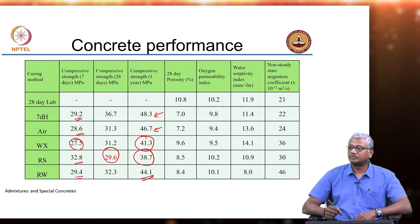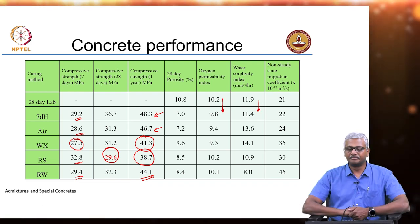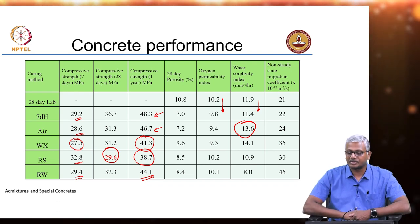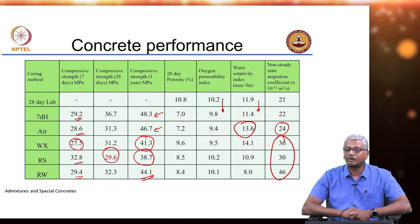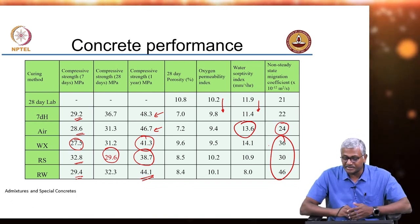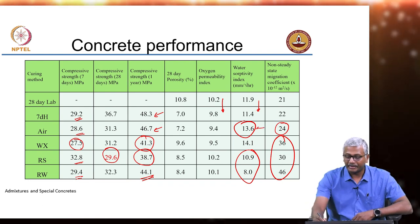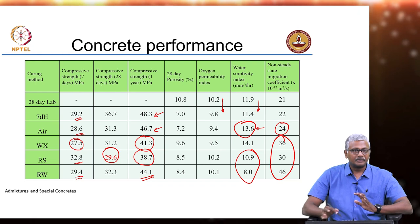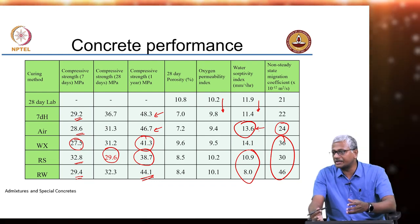What about durability properties? Interestingly in this study, the durability properties were not that badly affected comparing 28-day lab values versus 7-day Hessian — but with air curing only, water sorptivity increased tremendously. The chloride migration coefficient was also increased, but not significantly. However, all the curing compound-applied concretes indicated a much higher migration coefficient, indicating poorer durability — which is difficult to understand because the water sorptivity results suggest they are producing better concrete than air-cured material. There are various preconditioning regimes used for durability testing, and because of that, it becomes difficult to ascertain the overall impact of curing compounds.